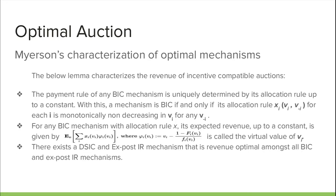Now let us look at Myerson's characterization of the optimal auction. In mechanisms like VCG and similar, reporting truthfully is a weakly dominant strategy — that is, there can exist non-truthful strategies in equilibrium. In the case where players have different distributions, some players can bid lower than their actual valuation and still have it as a dominant strategy. Myerson came up with a BIC mechanism that maximizes revenue in expectation by introducing virtual valuations. Every bidder's value is replaced by their virtual valuation. The bidder with the highest virtual valuation wins the auction, and the payment is uniquely determined for this allocation rule.